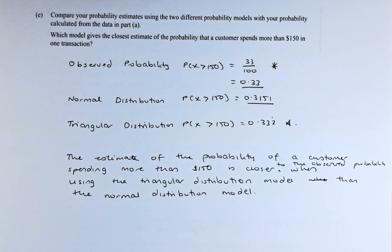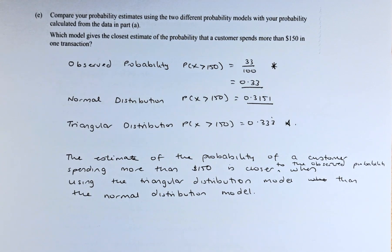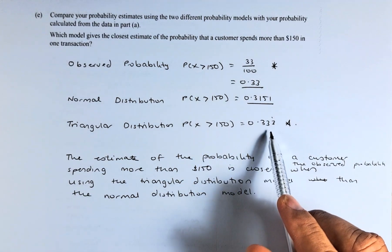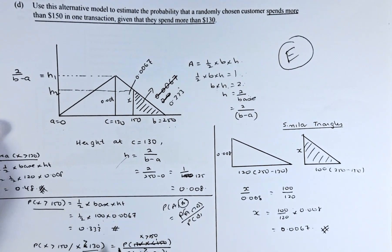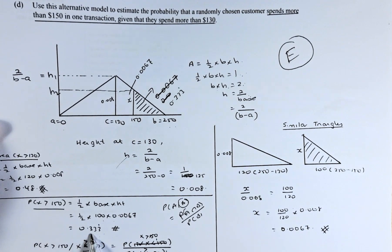And last but not least, in the last video, we did the probability on the triangular distribution. And the probability that is more than $150 is 0.333, which can be confirmed using here. 0.333 more than 150.